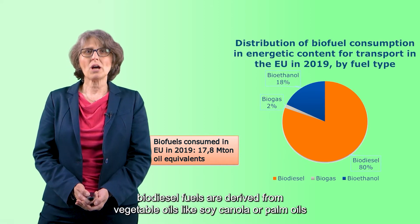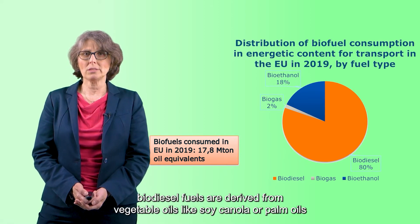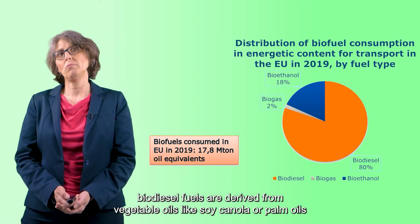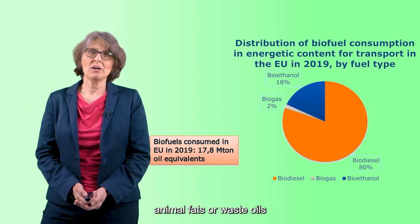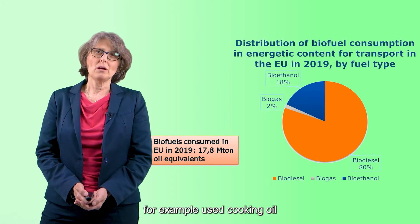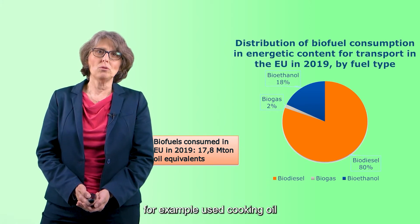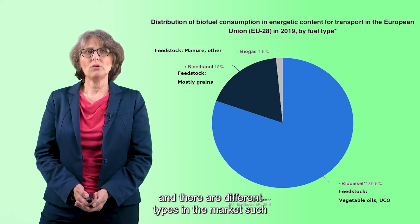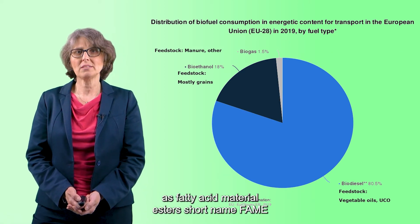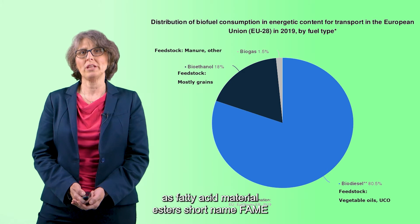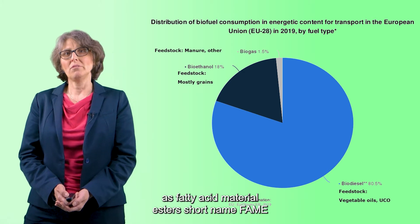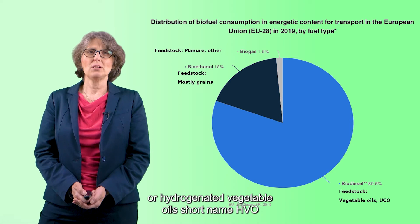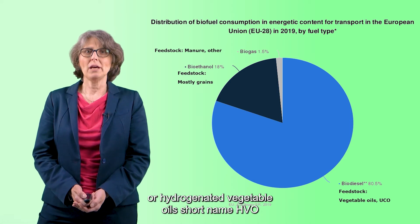Biodiesel fuels are derived from vegetable oils like soy, canola or palm oils, animal fats or waste oils, for example used cooking oil. There are different types in the market, such as fatty acid methyl esters, short name FAME, or hydrogenated vegetable oils, short name HVO.